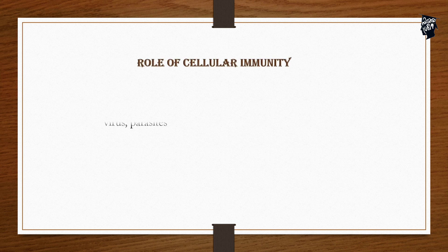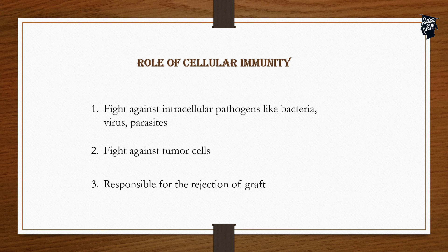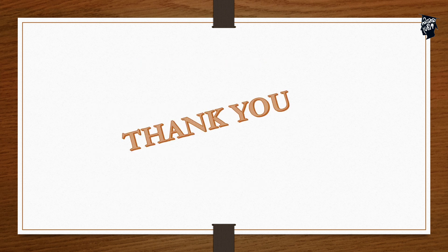Next is the role of cellular immunity. Cellular immunity fights against intracellular pathogens like bacteria, viruses, and parasites. They also fight against tumor cells and are responsible for the rejection of grafts. So let's conclude the topic of cellular immunity. Thank you.